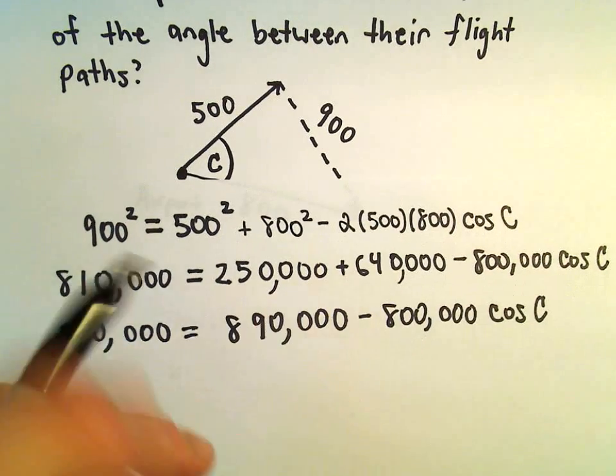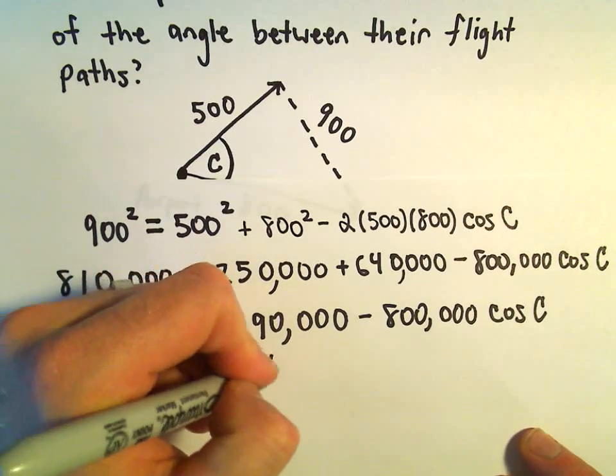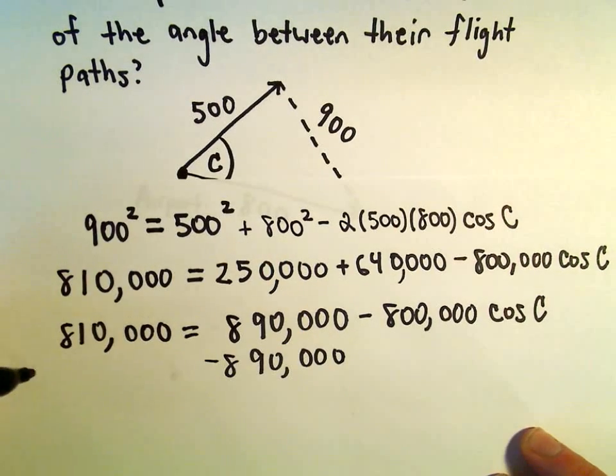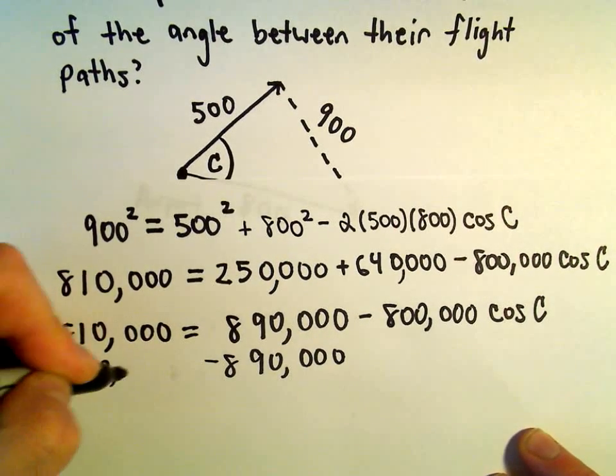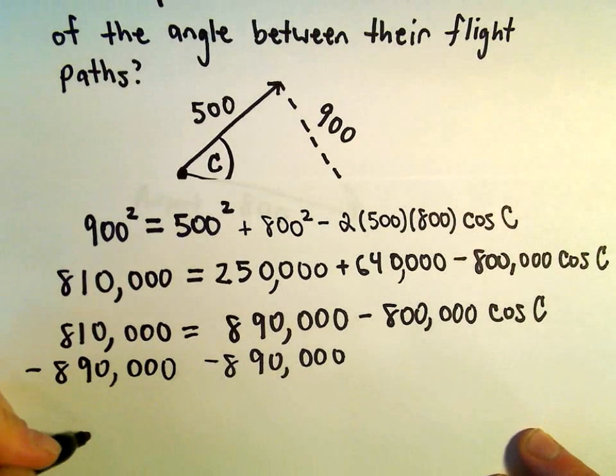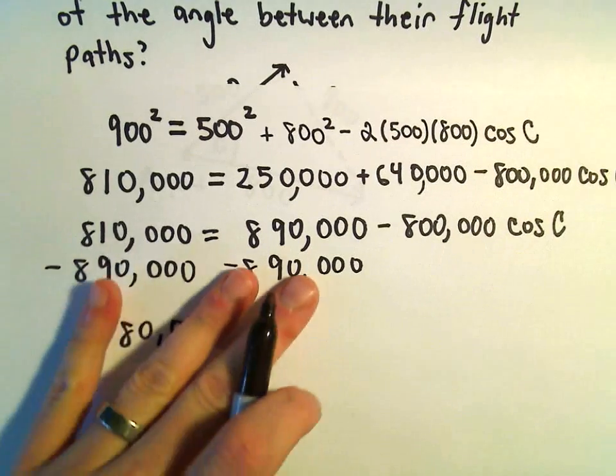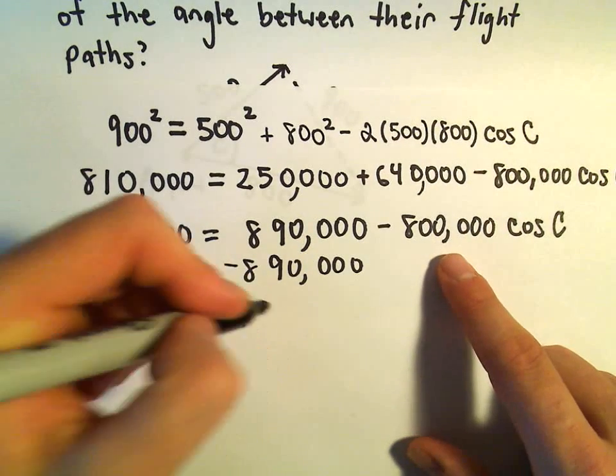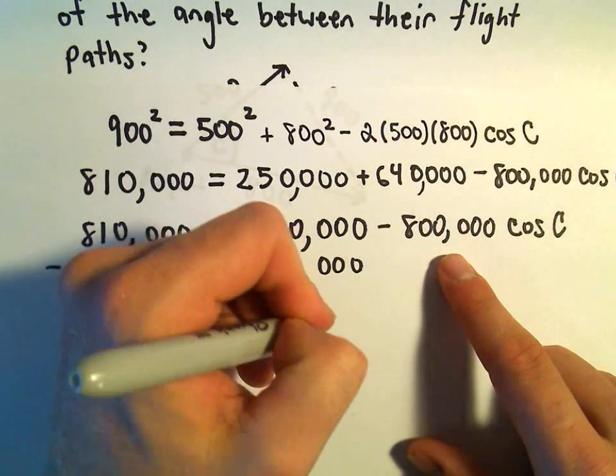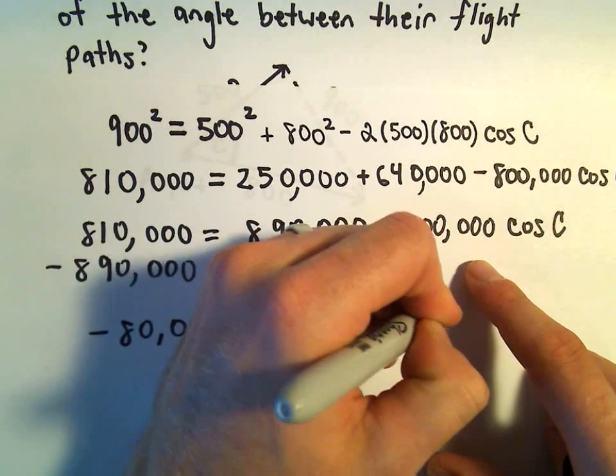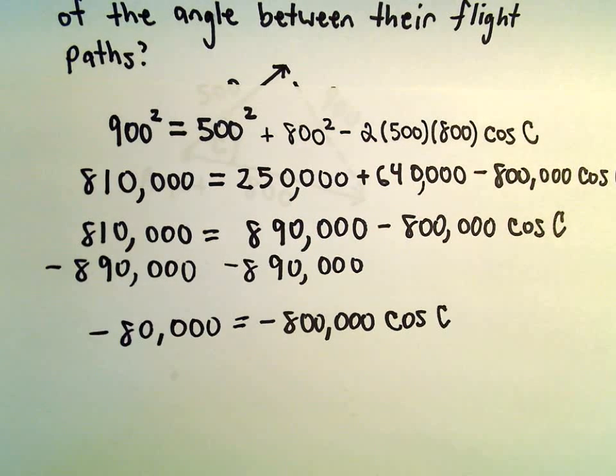Well, we could subtract the 890,000 from both sides. That'll leave us with negative 80,000 on the left. On the right we still have our negative 800,000 times cosine of C.